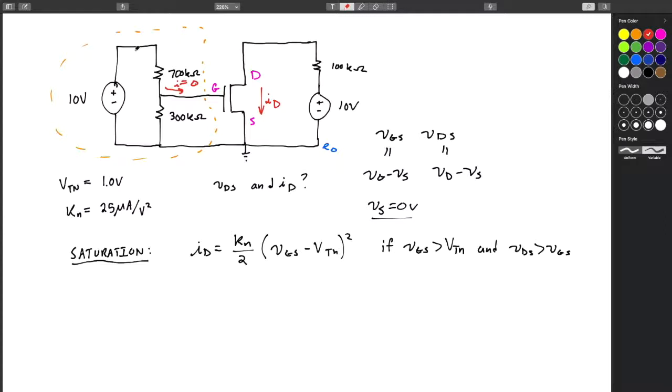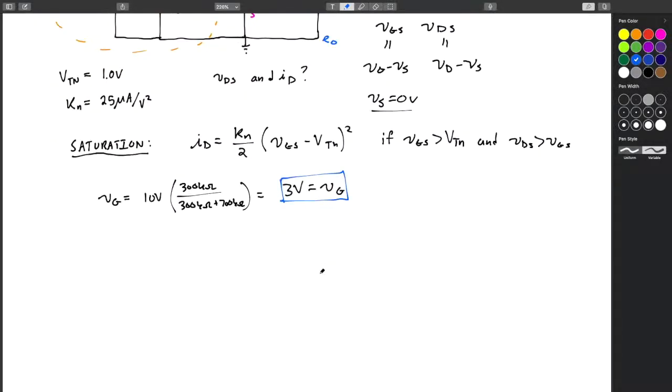So this current is 0, which means the voltage, VG, is going to be based off of just a straight-up voltage divider. And we can go ahead and calculate that right away. That will be VG equals 10 volts times 300K, just the bottom resistor, over the total resistance, 300K plus 700K. And this simplifies down to just 3 volts. So I'm going to circle that and just store it for a little bit later. Now, VG equals VGS, we know also, because VS is 0.